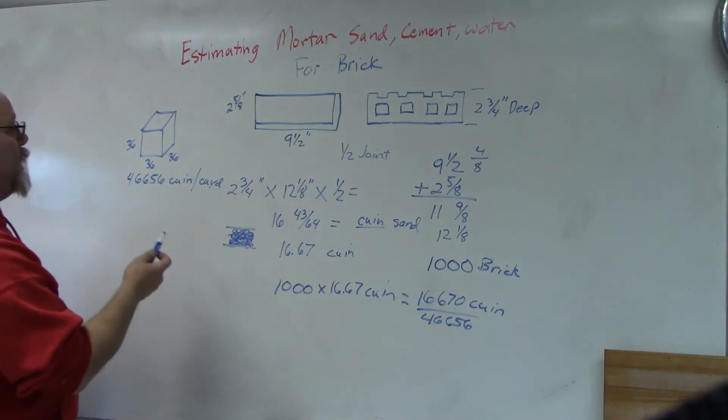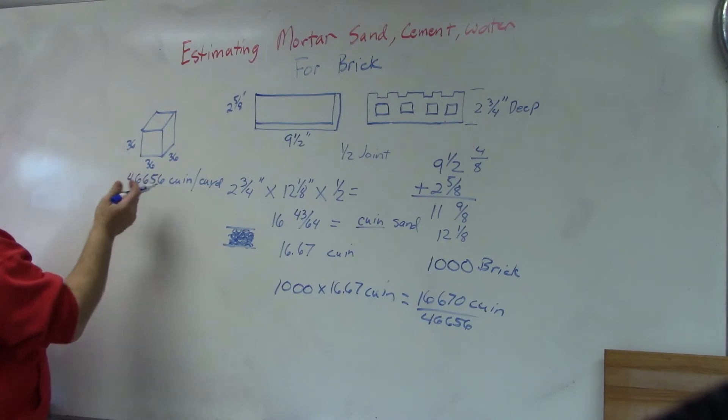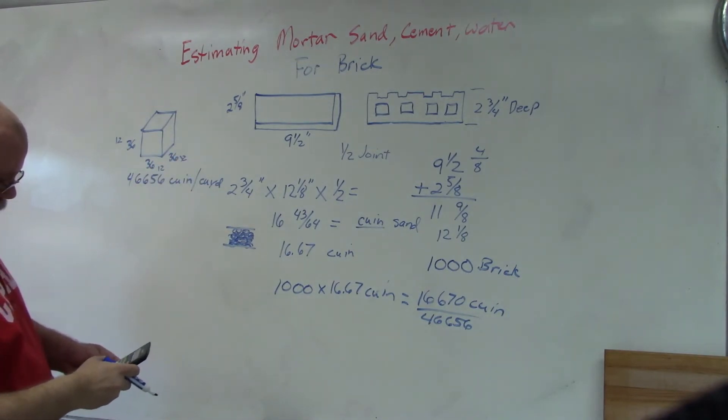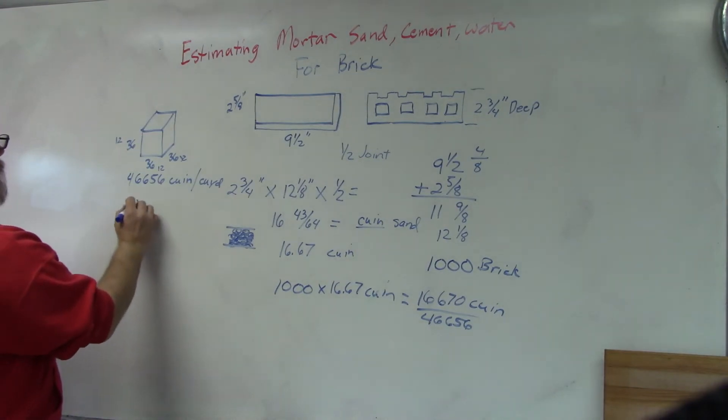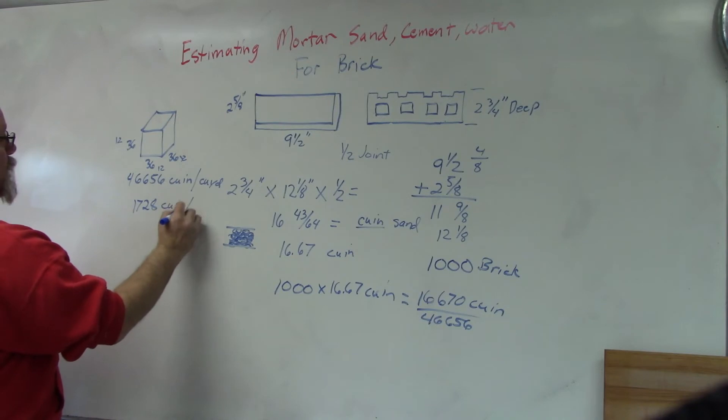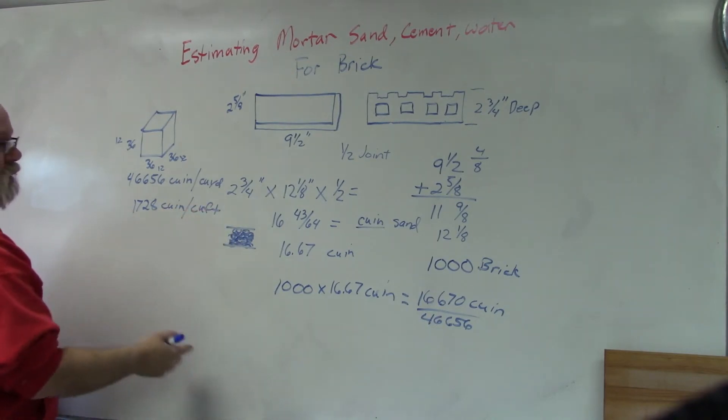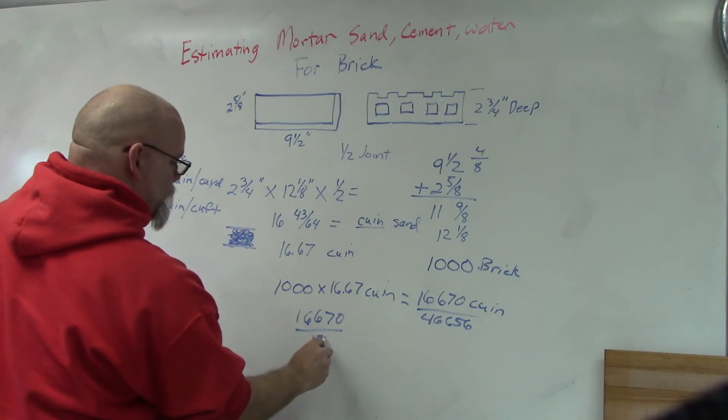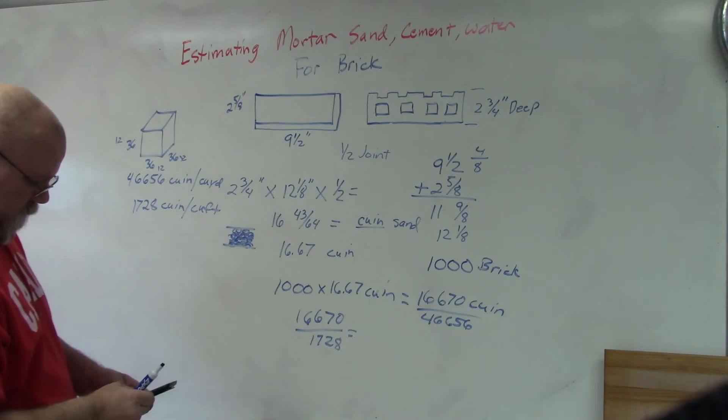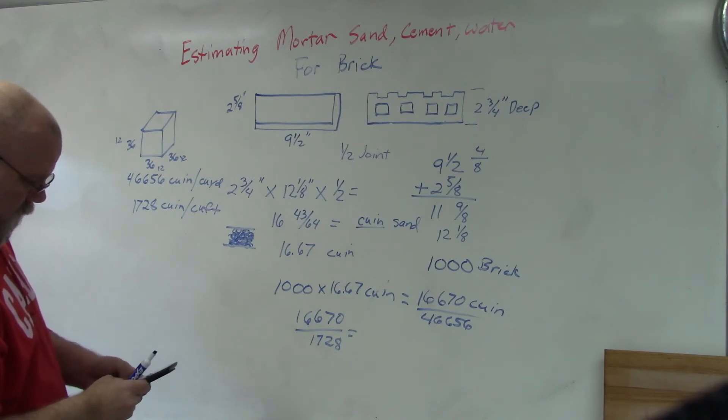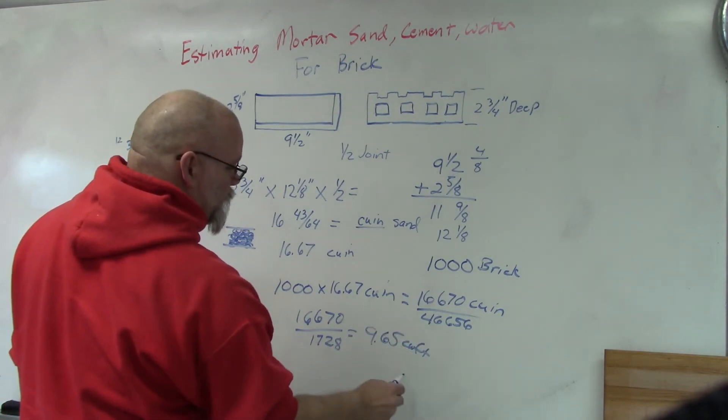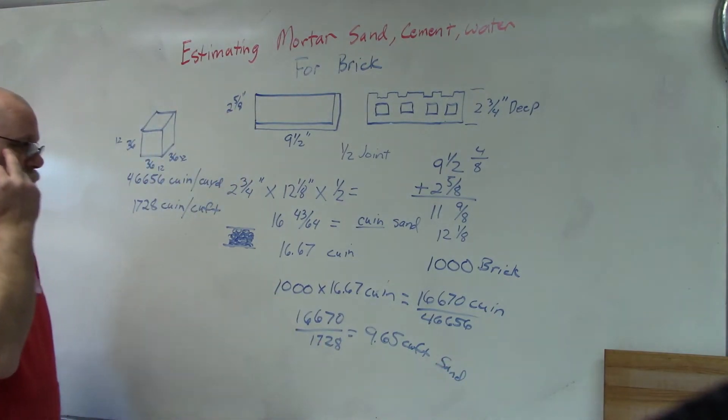If I wanted cubic feet, then I would figure out how many inches are in a foot. So 12 times 12 times 12 gives me 1,728 cubic inches in a cubic foot. So if I wanted this number in cubic feet, then I would take 16,670 and divide by 1,728, so 16,670 divided by 1,728 would give me 9.65 cubic feet of sand.